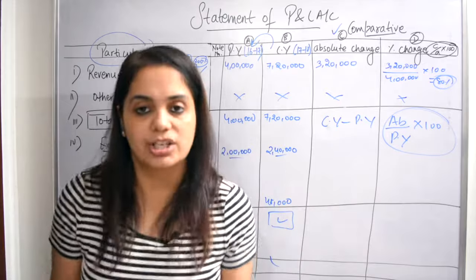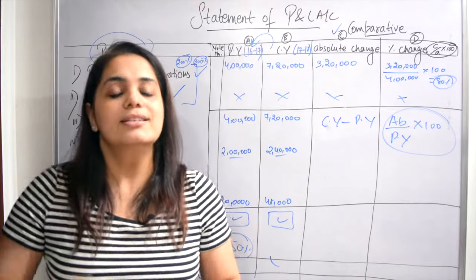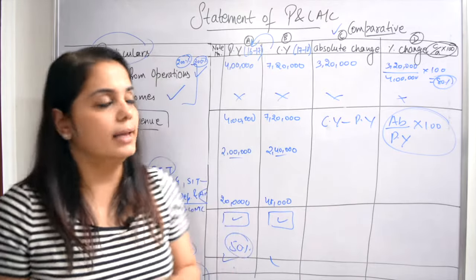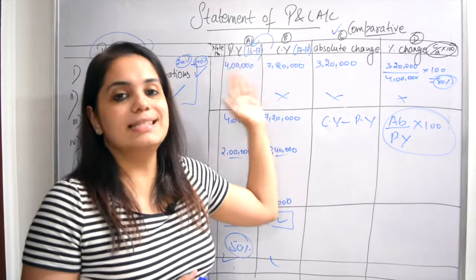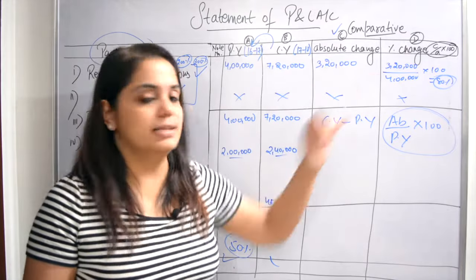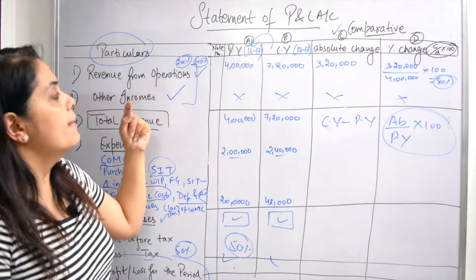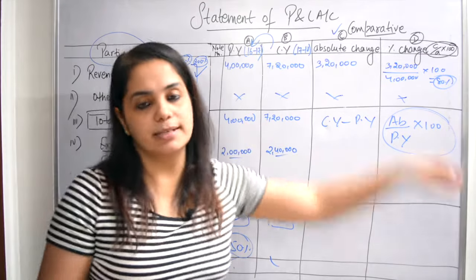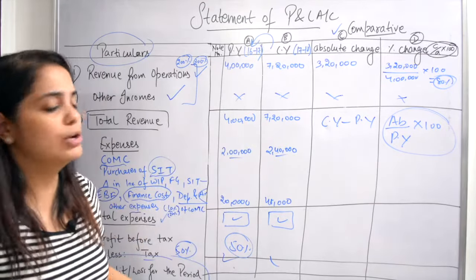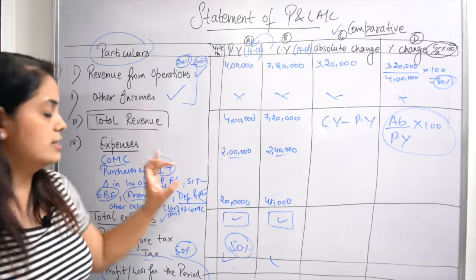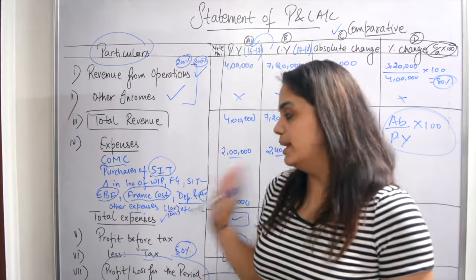Just remember one thing: PNPCA — Particulars, Note Number, Previous Year, Current Year, Absolute change, and Percentage change. Note number is very important because many things like change in inventories require you to make notes. Keep this mnemonic in mind and you will not make a mistake.